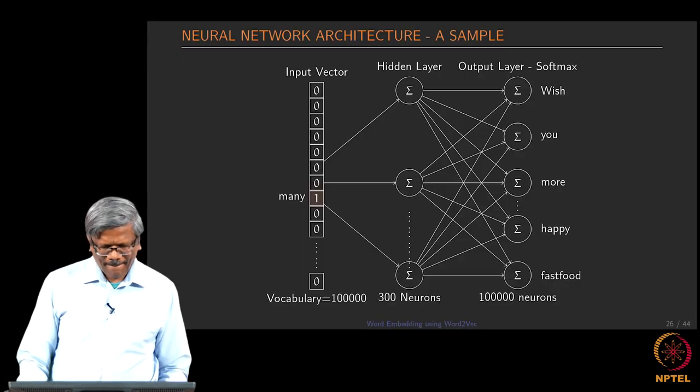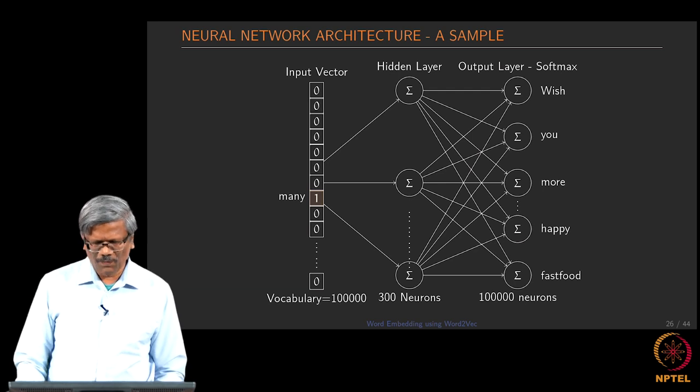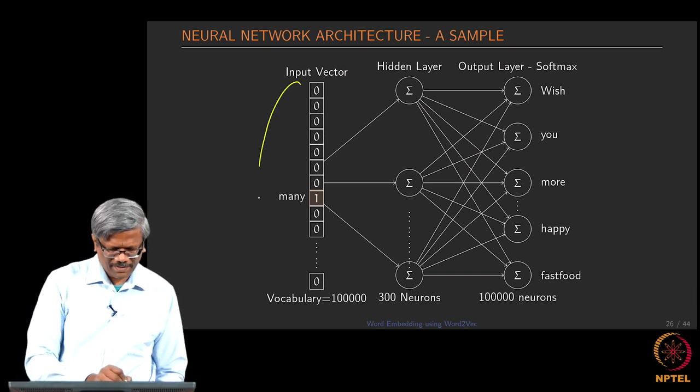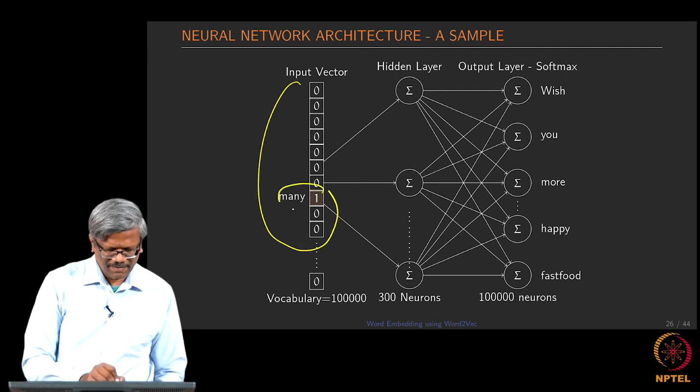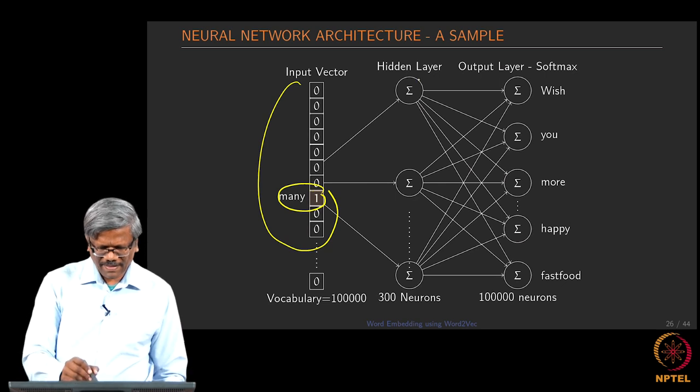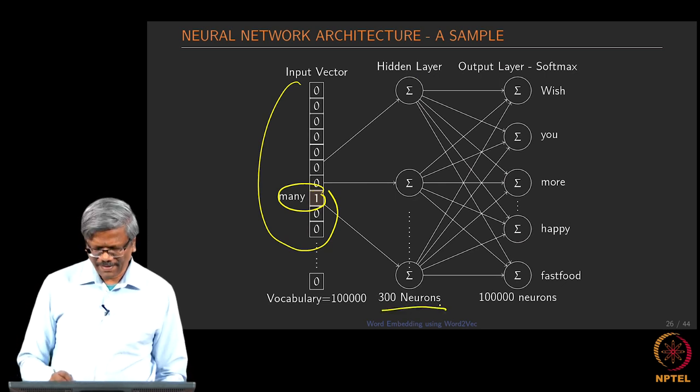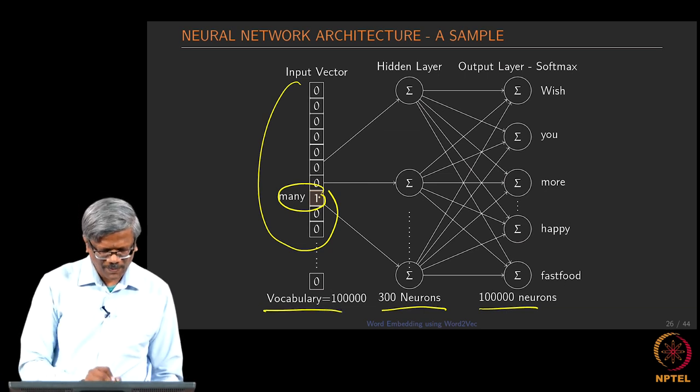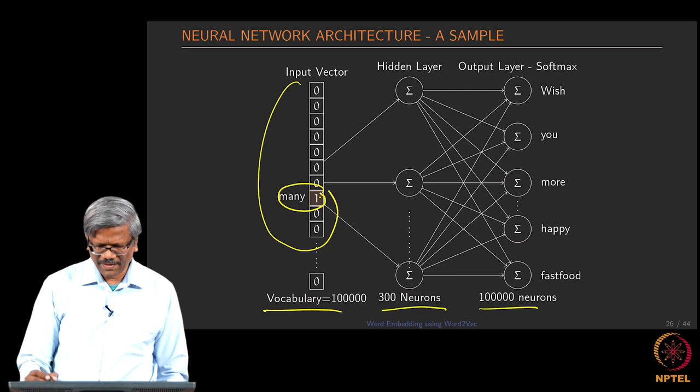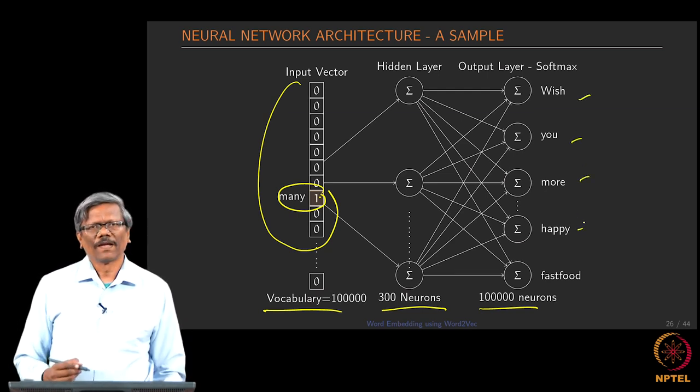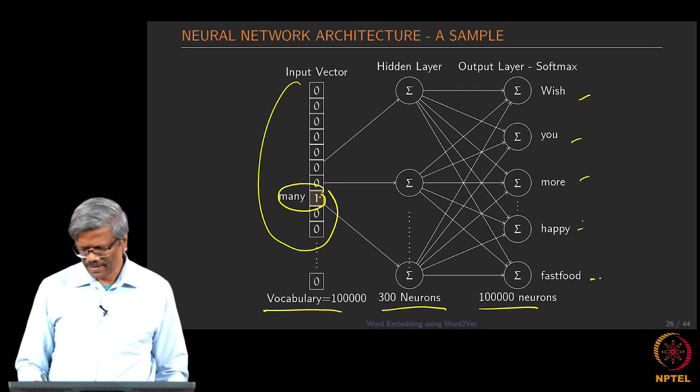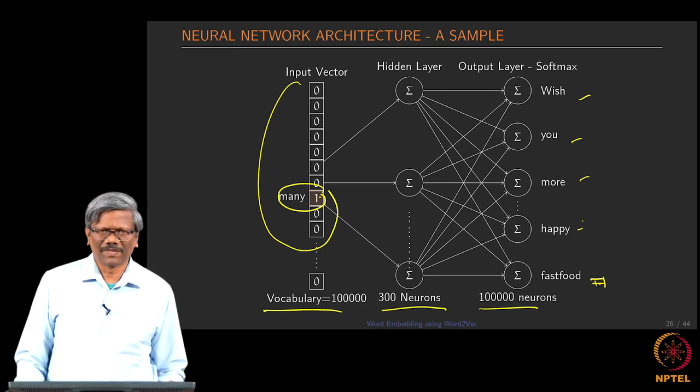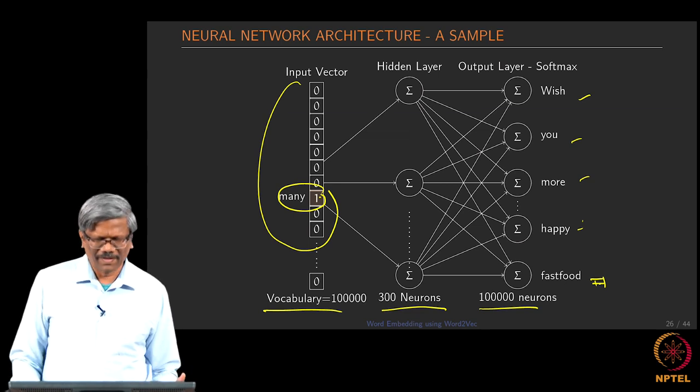This is another simple architecture that shows how you can create a skip gram based model. Here we have the input vector and we are inputting many as our word as input and then we have a 300 neuron hidden layer and then we have 100,000 neurons as our output layer which is same as the vocabulary size. When you input this we expect this to provide you the context and these values would be higher than the first output that you find at the bottom. This is how we actually capture the context and the input word properly.